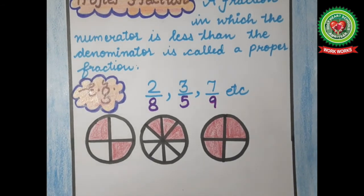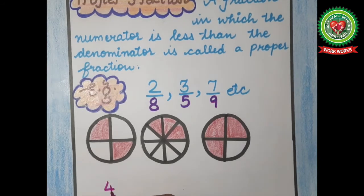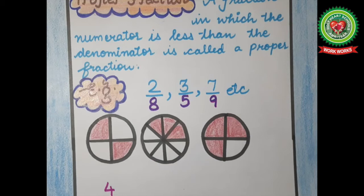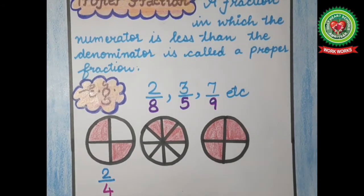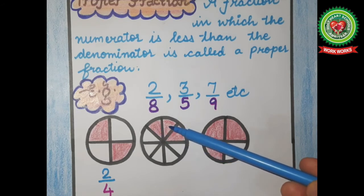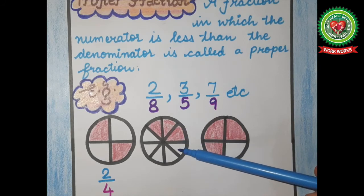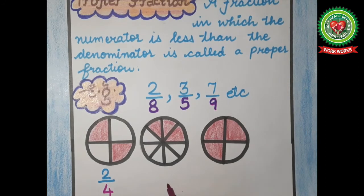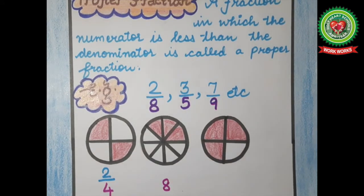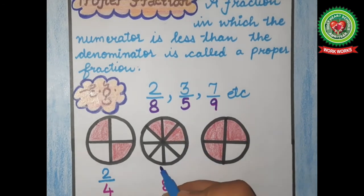Now students, tell me how many total parts are there? 1, 2, 3 and 4 — total parts are 4. And out of 4 parts, how many parts are shaded? 1 and 2. Now let's move to the other figure. Count the total number of parts: 1, 2, 3, 4, 5, 6, 7 and 8 — total parts are 8. And how many parts are shaded? 1, 2 and 3 — three parts are shaded.